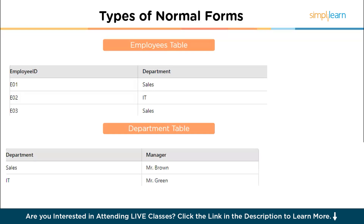To achieve BCNF, we split the table to ensure that every determinant is a super key, creating an employee table and a department table. In the employee table, employee ID is the primary key, and in the department table, department is now the primary key. This decomposition ensures that every functional dependency is satisfied by a super key, meeting the requirements of BCNF.